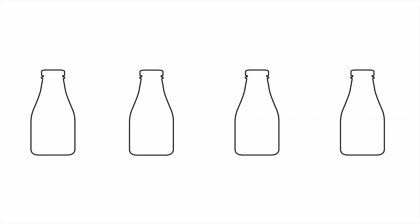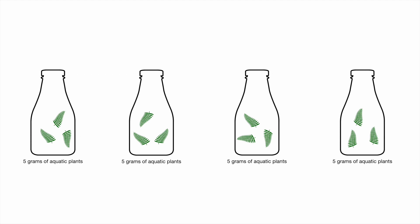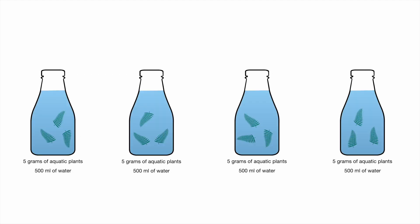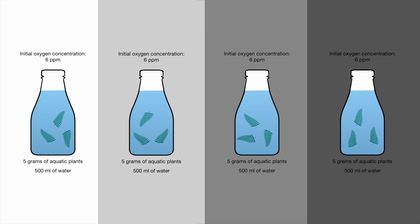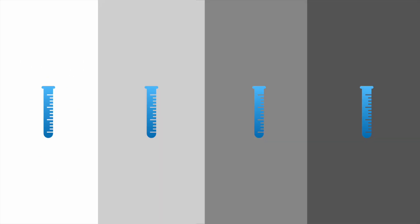A student set up four clear sealed bottles. Each bottle was filled with five grams of aquatic plants and 500 milliliters of water. The student determined that the initial concentration of oxygen in each of the bottles was six parts per million. The bottles were then placed in environments that had the same temperatures but different light intensities. After 24 hours, water samples were removed from each of the four bottles.